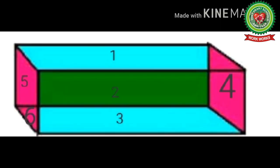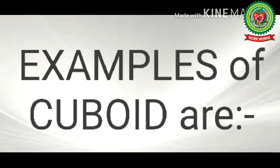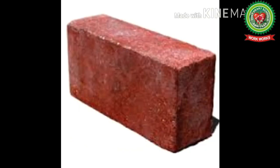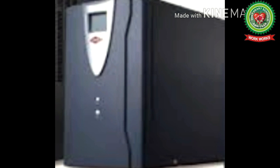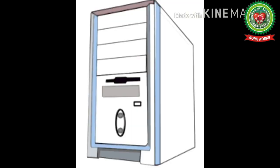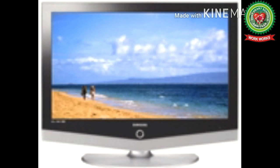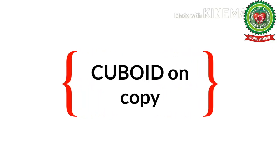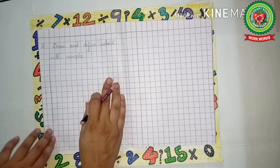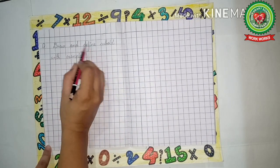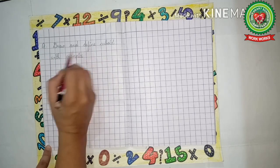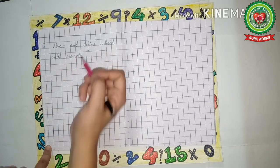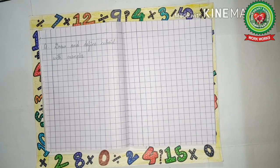Some examples of cuboid are brick, UPS, CPU, and LCD. Now let's see how to do a cuboid on copy. The question is: draw and define cuboid with examples. Now here we will learn first how to draw a cuboid.